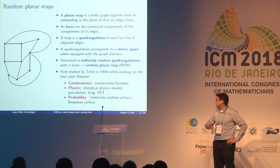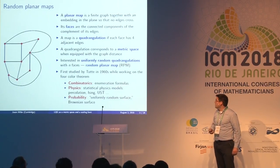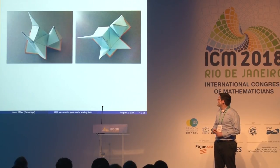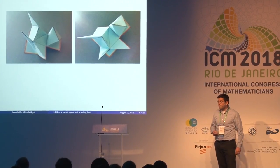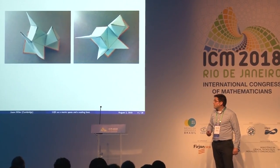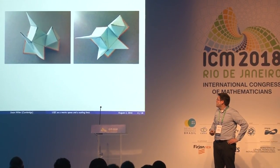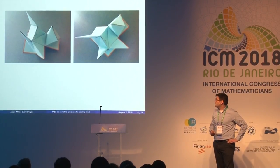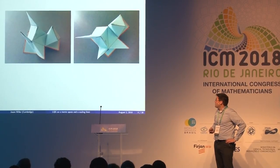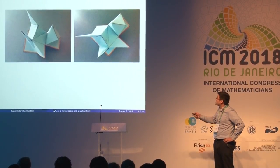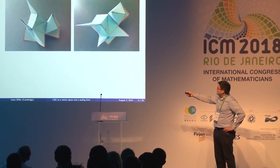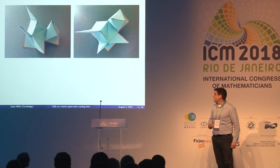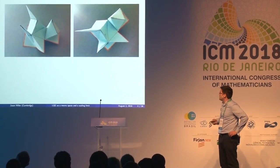From the probability perspective, uniformly random planar maps discretize the question of what it means to pick a surface uniformly at random, and in the limit you would expect to get a kind of Brownian surface. This picture of a random quadrangulation — borrowed from Bertrand Duplantier — shows squares folded together to form something topologically equivalent to a sphere.